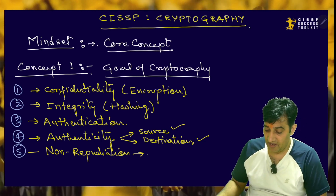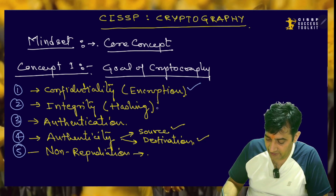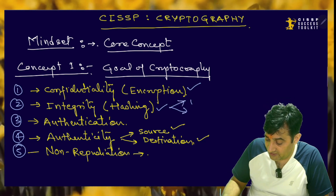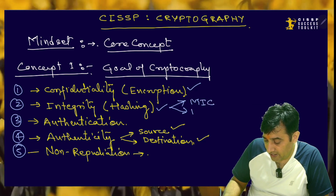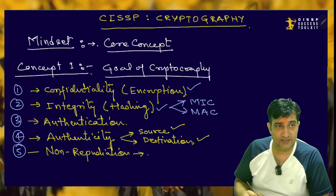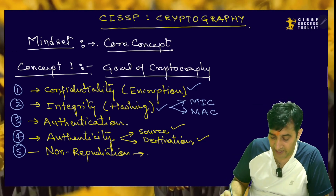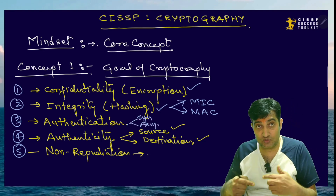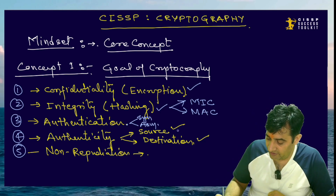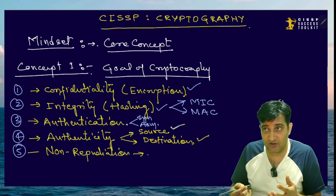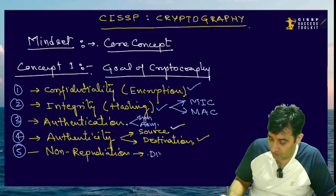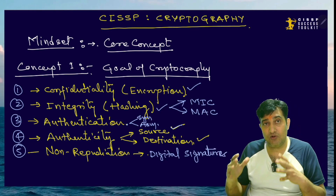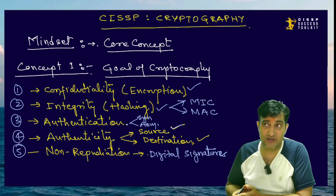So these are the five goals of cryptography. Confidentiality, we achieve through encryption. Integrity, we achieve by hashing — and in hashing we have two things we will talk about later: one is called message identification code and one is called message authentication code. Authentication — we use both symmetric and asymmetric in various situations to authenticate. We have also spoken about source and destination authenticity. And finally, non-repudiation as well, which is achieved through digital signatures. These are all things reflecting the applicability of cryptography in your real world.